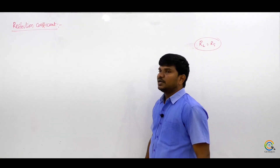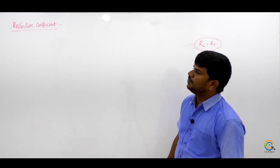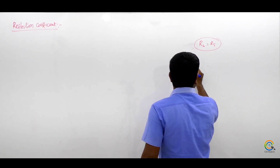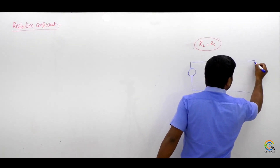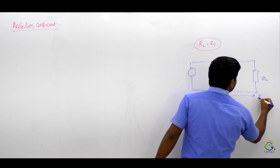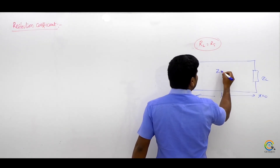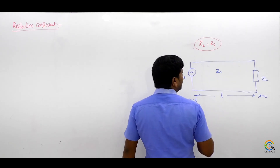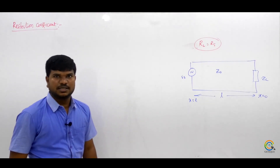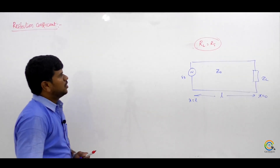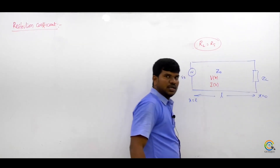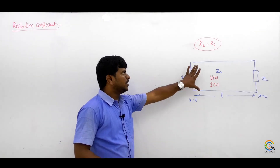Similarly, in the transmission line concept, there is a source and a load. The source is here, the line has length L and characteristic impedance Z0, and the load ZL is at X equals 0, while the source is at X equals L. We know there will be a V(X) and I(X) on these lines — voltage and current waves will be produced.